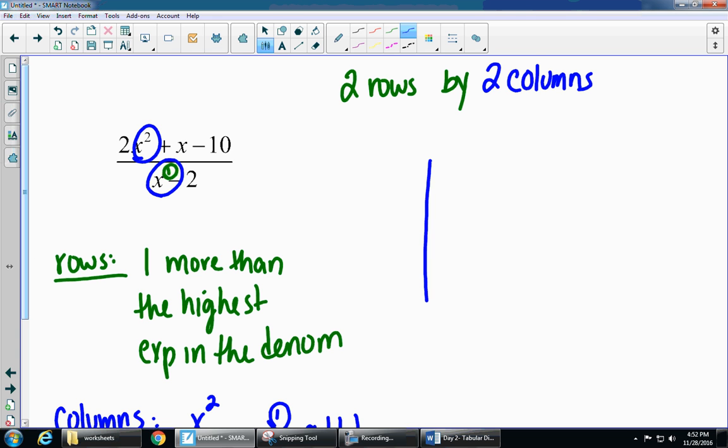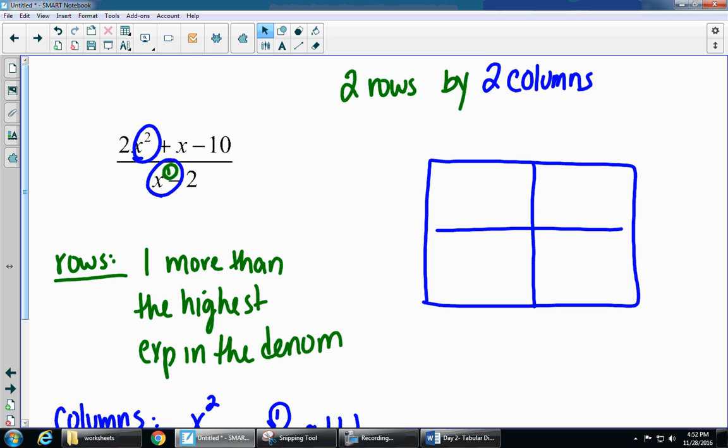I'm going to set up my 2 by 2 box for the tabular method of dividing. Your divisor always goes on the right-hand side, so I have x minus 2. And then on the diagonals is what is in your numerator, so I have 2x squared plus x minus 10.